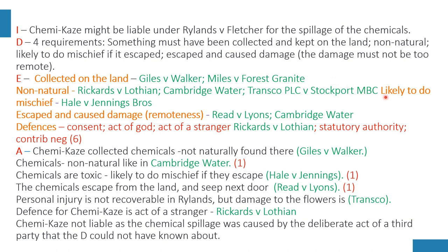The next rule is that the thing must be likely to do mischief if it escapes. This is interesting because the thing need not be inherently hazardous per se — it need only be likely to cause damage if it escapes. A good case here is Hale v Jennings Brothers, where the defendant operated a chair-airplane roundabout at a fairground. One of the chairs broke loose, flew through the air and hit the claimant. This was held to be an escape for Rylands and Fletcher purposes — a chair in that context was likely to do mischief if it escaped.